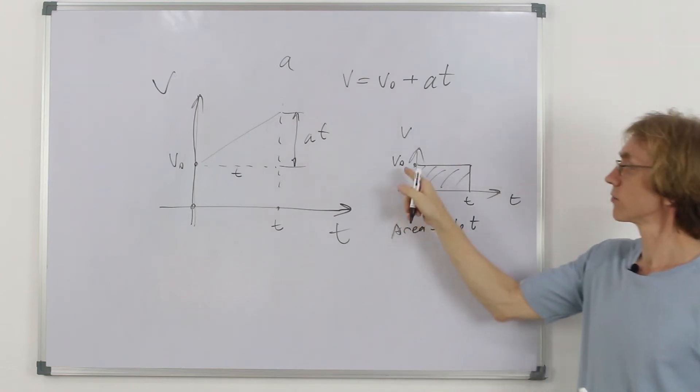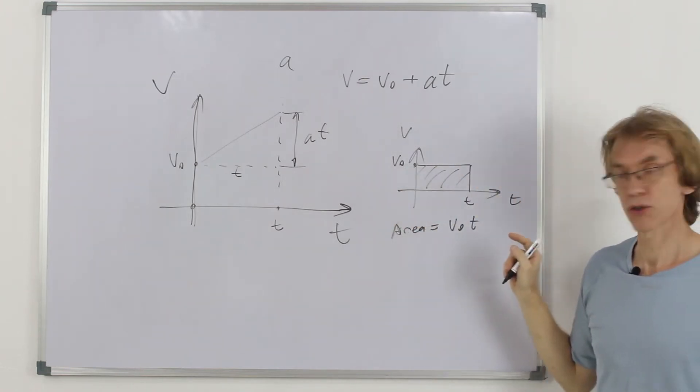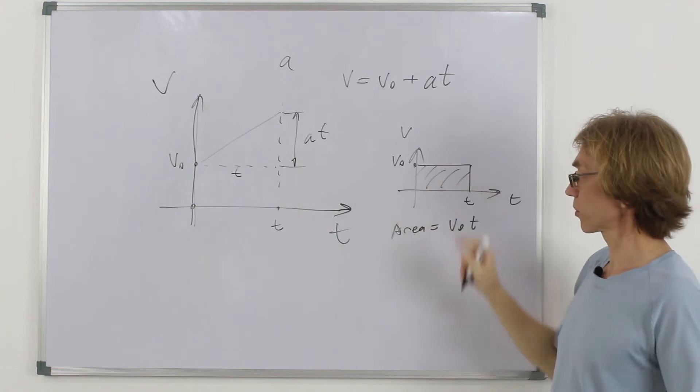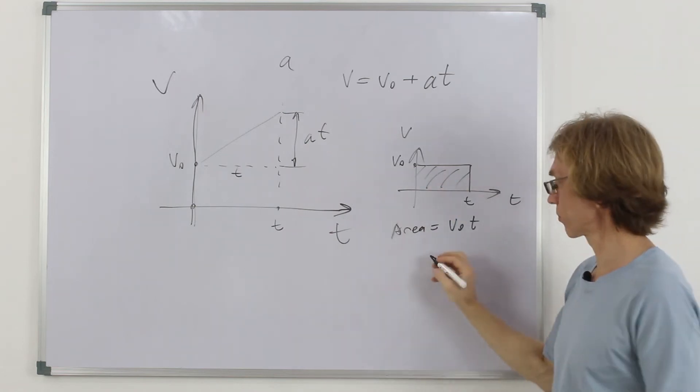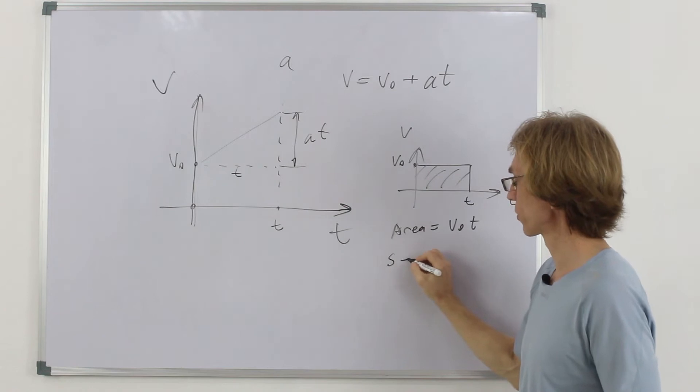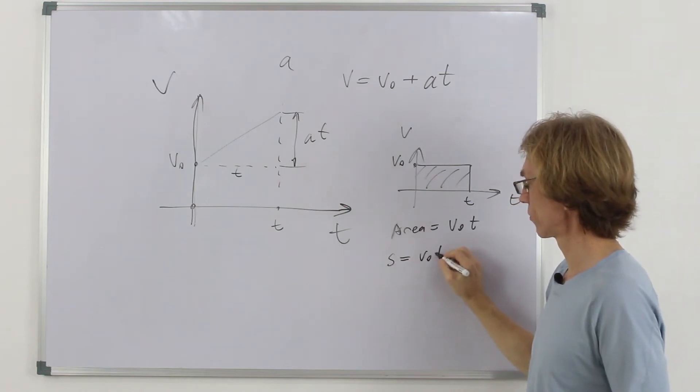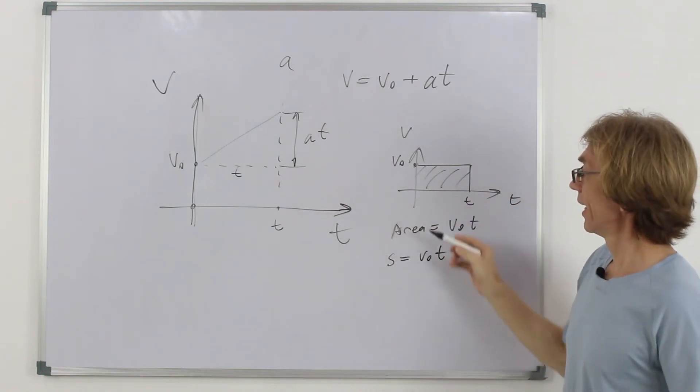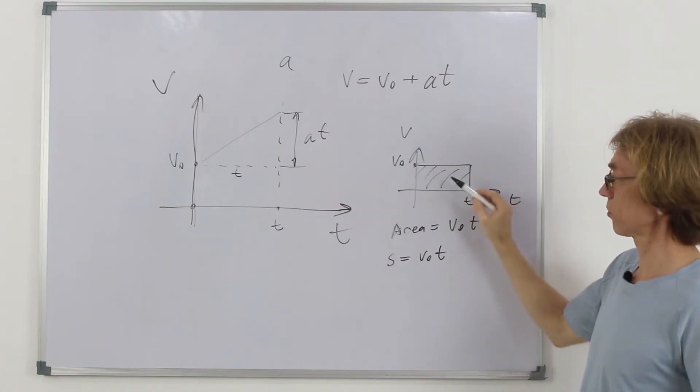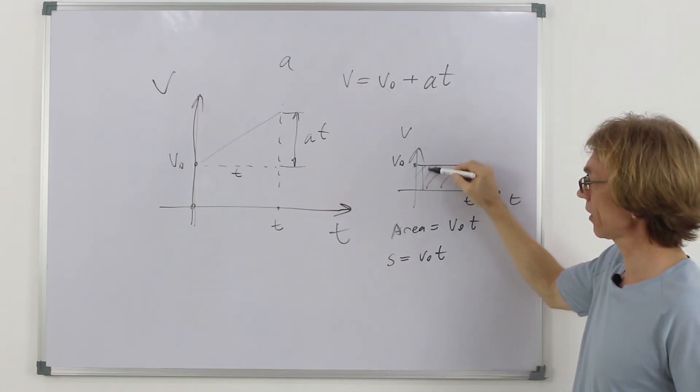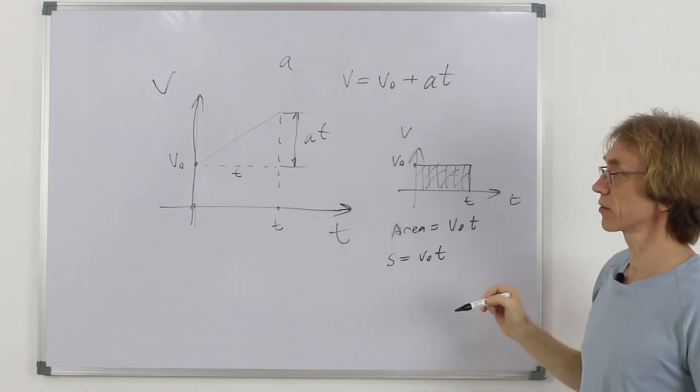But you see, our v0 is constant. It doesn't change. It's velocity multiplied by time. But what is velocity by time? It's obviously displacement. So, we got displacement velocity by time. And so what we found? You see, that the area below the graph is equal to displacement.